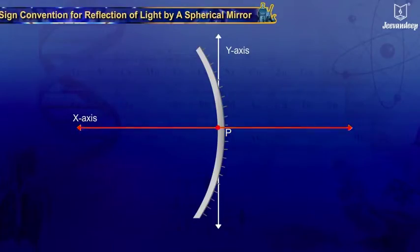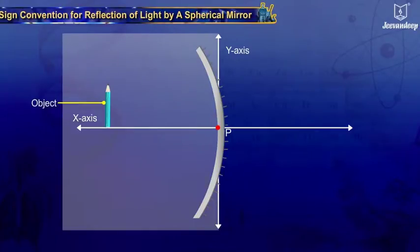The principal axis is taken as the X-axis of the coordinate system. The sign conventions are as follows: One, the object is always placed on the left side of the mirror.